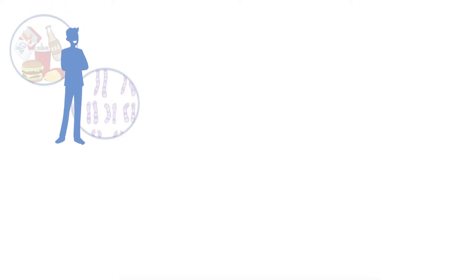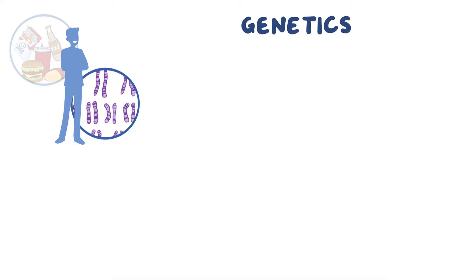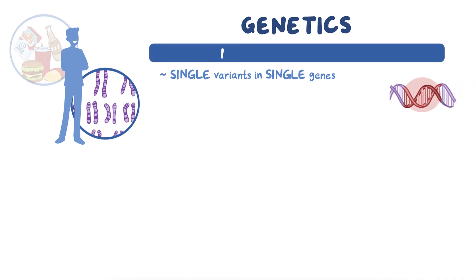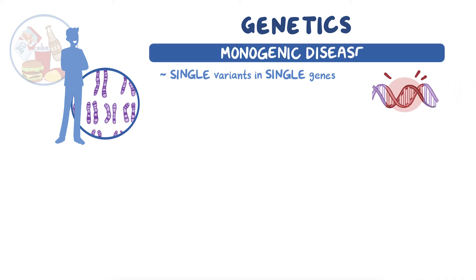In human disease, both environmental and genetic factors are important, and there are two general ways genetics can play a role. For some diseases, single variants in single genes can have a very large impact, meaning they can actually cause a disease all on their own. These are called monogenic diseases and are usually quite rare.